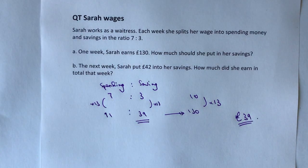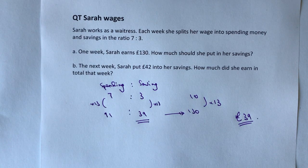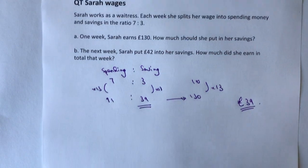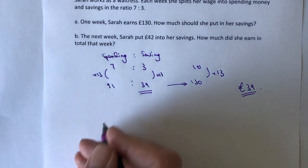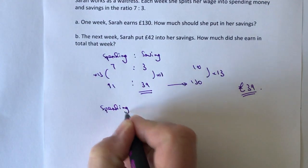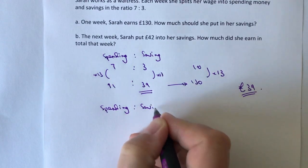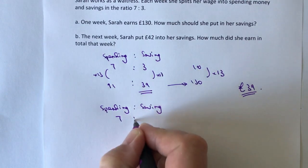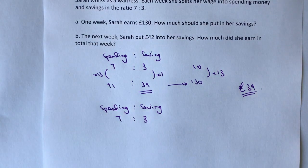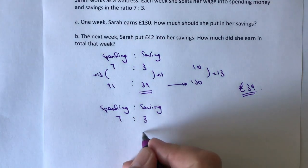Then it says: in the next week Sarah put forty-two pounds into her savings — how much did she earn in total that week? Well, again let's do a very similar exercise. We've got spending and saving again in the ratio seven to three, and on this particular occasion she put forty-two pounds into her savings.